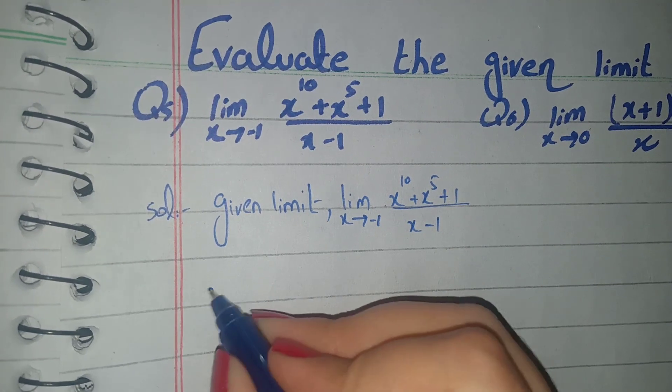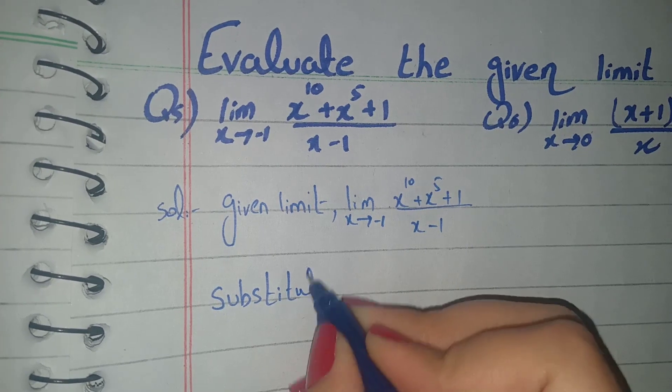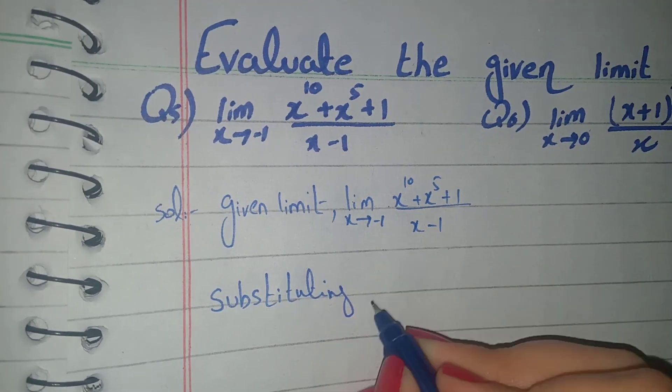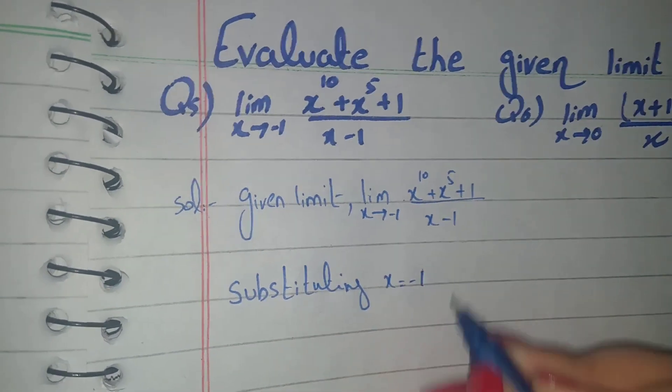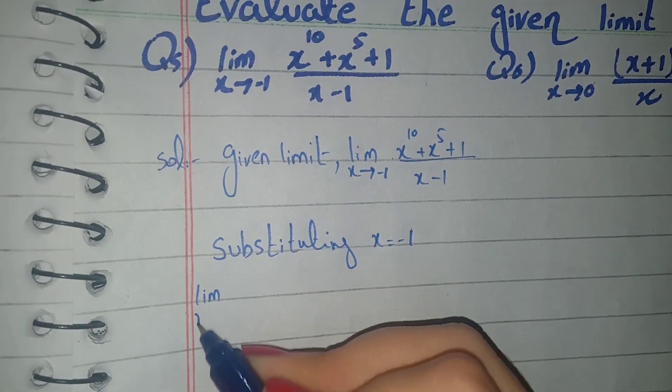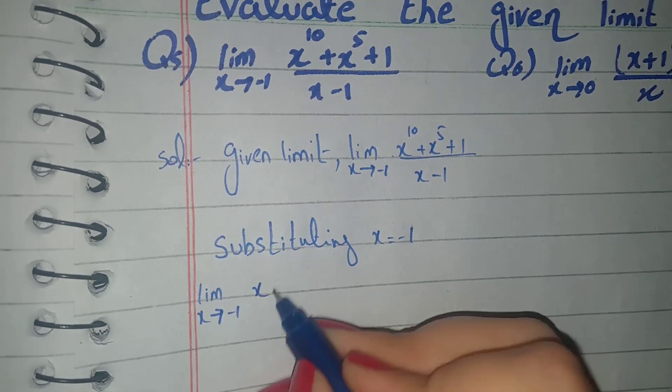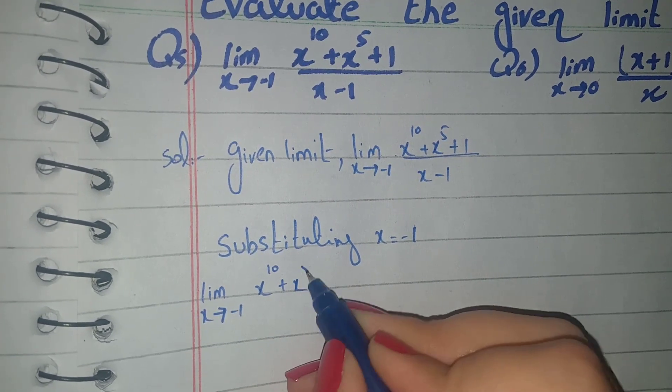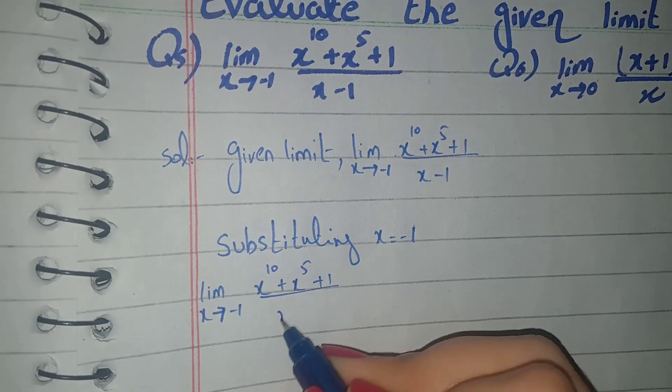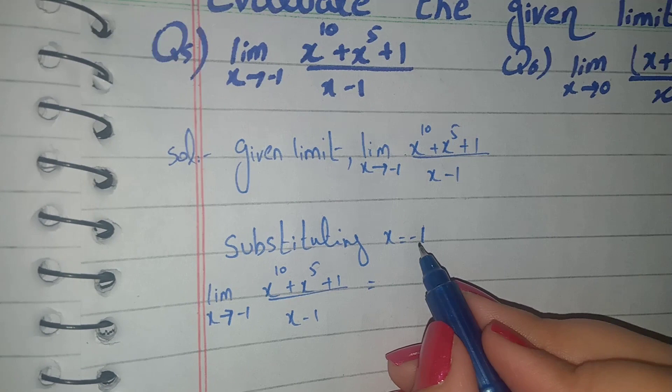x approaches to negative 1. We will write the given limit. Substituting x equal to negative 1. Here we will write the limit x approaches to negative 1. Here we have x^10 plus x^5 plus 1 divided by x minus 1.